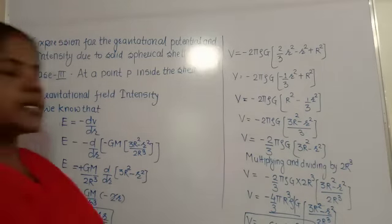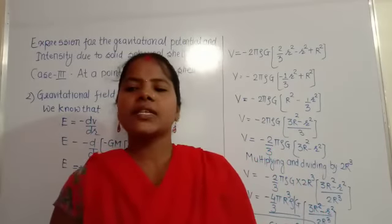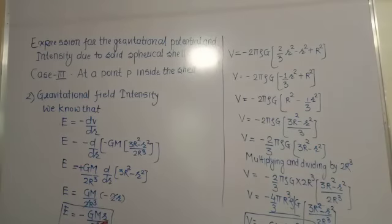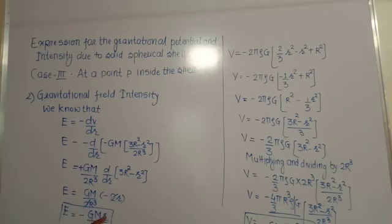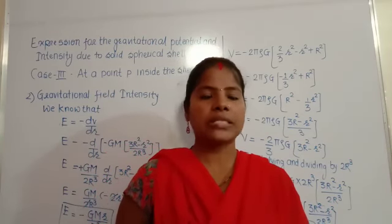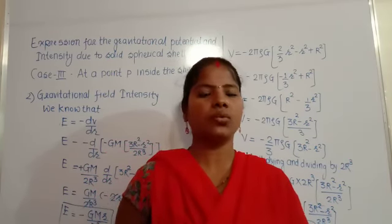From this equation, the gravitational field intensity E at a point P inside the sphere is directly proportional to the distance r of point P from the center — that is, E ∝ r. In the next class, we will calculate the gravitational force using F = mE. Thank you.